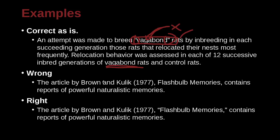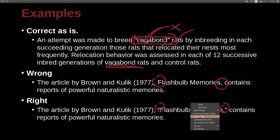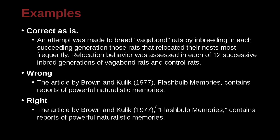The article by Brown and Kulik, 'Flashbulb Memories,' contains reports of powerful naturalistic memories. Here, 'Flashbulb Memories' is an article inside a journal, so we need the quotation marks. Notice the comma placement: there is a comma after the closing quotation mark — actually, the comma goes inside the quotation marks — and then one space after the quotation marks.